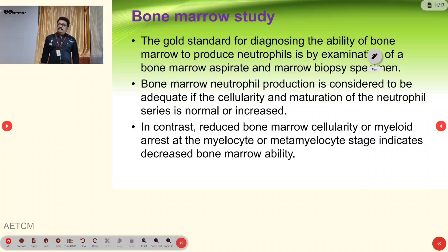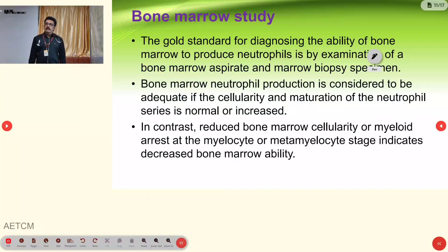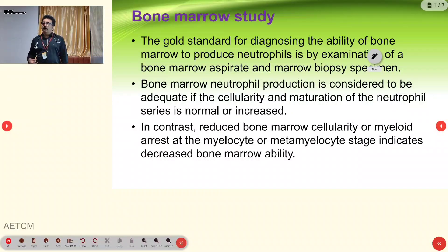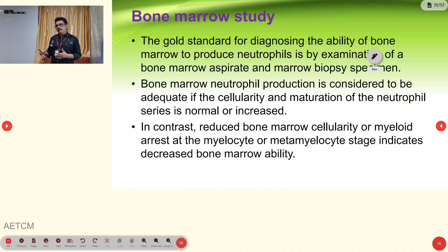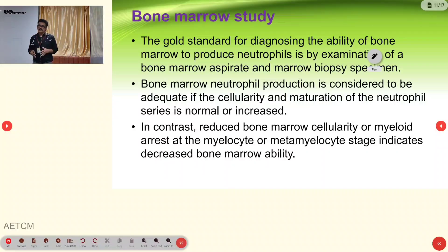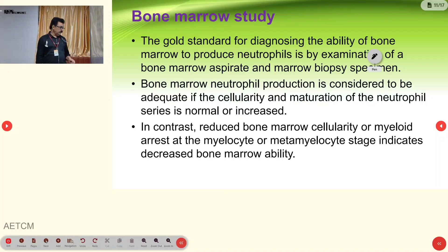Bone marrow biopsy is the gold standard investigation, and the specimen should be examined for various pathologies before giving any drug. If you start giving bone marrow stimulants, B12, or folic acid, the pattern will be masked by your treatment. If you know the reason for bone marrow suppression — for example, a patient on methotrexate who is not taking folic acid — you can give folinic acid. If you do not know the cause, it is better to do bone marrow study first, then treat the patient.